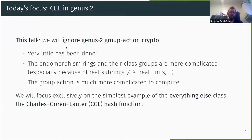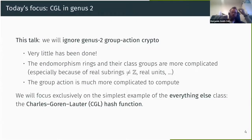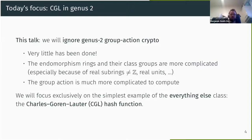In this talk, we're going to ignore genus two group-action-based cryptography — things like CSIDH, Couveignes, and Rostovtsev-Stolbunov. That's not because it's less worthy of attention; it's just that we've only got an hour, and very little has been done on this subject.